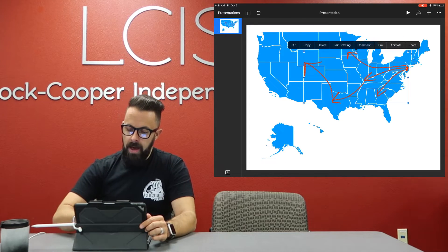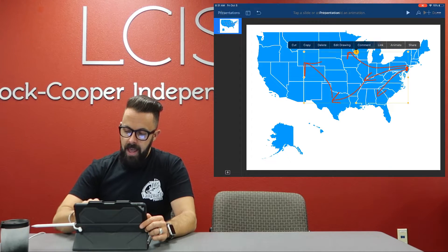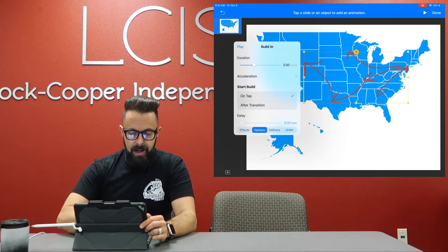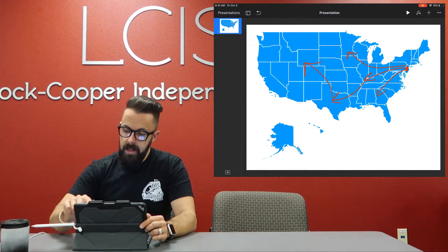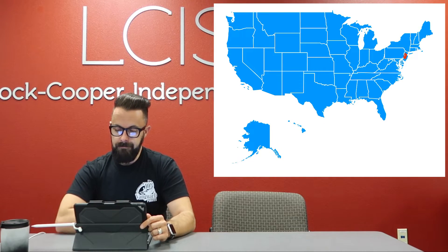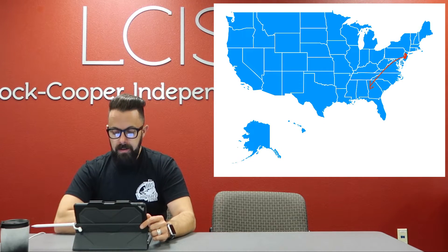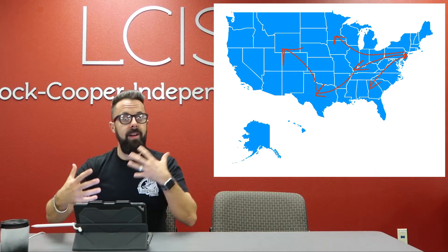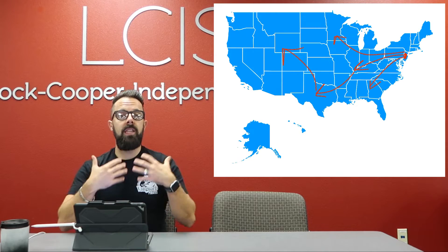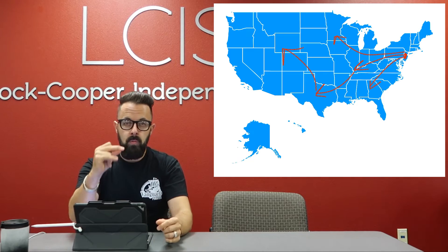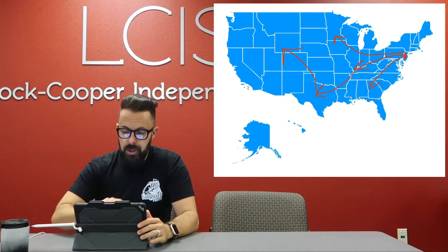Now if I want to slow it down, I'm going to go back to that animation, click Line Drawing, and back in Options maybe I want it to take five seconds. Click away and done. I'll press play — so now this is showing the movement of troops, or the movement of pilgrims, or whatever it is you're wanting that kid to show. They're able to add animation really quickly into their illustrations.